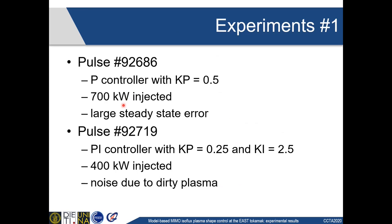We can now move to discuss the actual experiments. All of the pulses we'll see are upper single-null plasma discharges. The first pulse is the one we have just seen, which is shot number 92686. In this case, we had 700 kilowatts of injected power and a purely proportional controller on each channel with Kp equal to 0.5. You will see that in this case the controlled variables had a quite large steady-state error, and as we've seen from the simulation before, we expect to gain some improvement introducing an integral action.